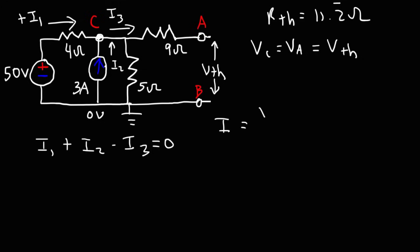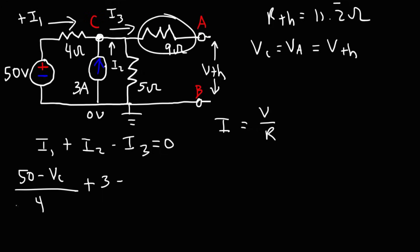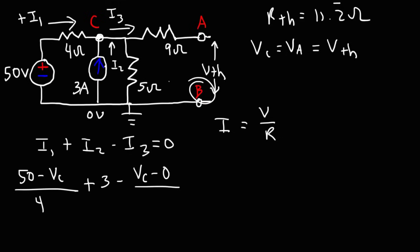Current equals voltage divided by resistance, based on Ohm's law. To calculate I1, the voltage across that resistor is 50 minus Vc, divided by the 4 ohm resistor. I2 is based on the current source of 3 amps. There is no current flowing through the 9 ohm resistor, so I3 flows completely through the 5 ohm resistor. Therefore I3 = (Vc - 0) / 5.